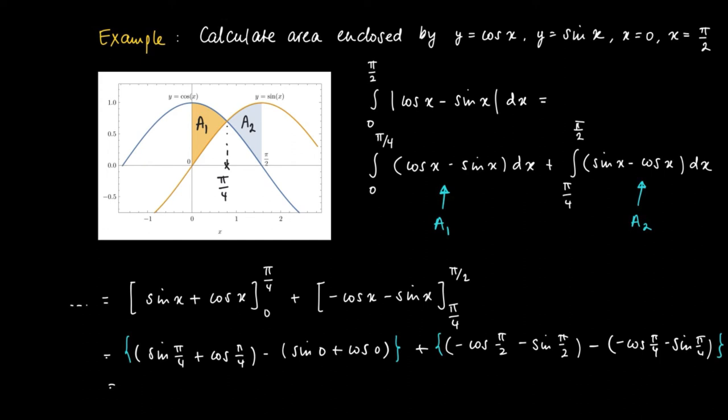So, now the sine of pi over 4 is a half times the square root of 2, and the same value, cosine of pi over 4 is the same value, so we get 2 times a half times the square root of 2 minus 1, which is the cosine of 0. And on the other side we get similar terms, so also there we get 2 times a half times the square root of 2 minus 1. So we get, in total, 2 times the square root of 2 minus 2.